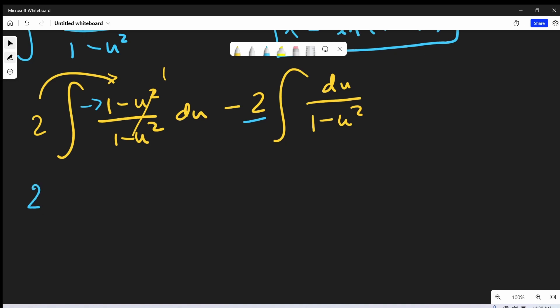So then we'll go ahead and integrate. We'll have our 2 out front. This integral is just 1. Integrating that's just going to give us u minus 2. And then for this integral, I'm going to use a formula. Let's just take a look at that real quick.